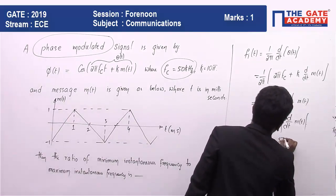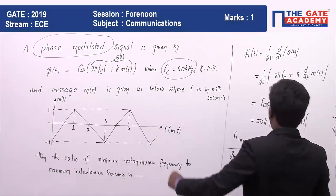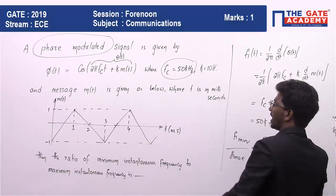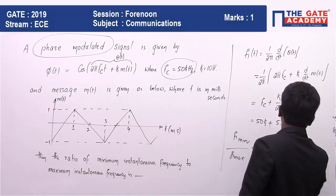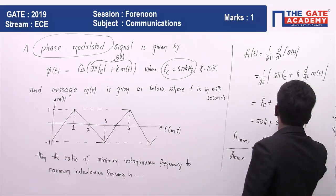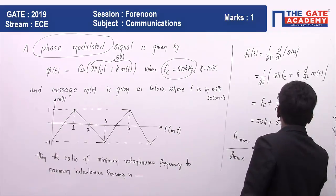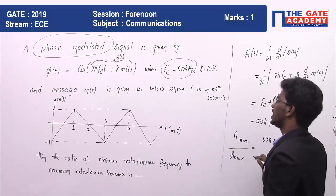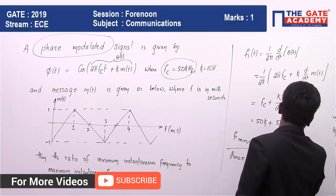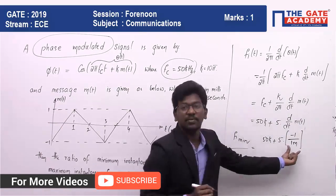And what will be the minimum slope? 50k + 5 · what is the value for that one? Difference in y, that is 0 - 1, that is -1 divided by difference in x, which is how much? 3 - 2, that is 1 millisecond. So this is the minimum slope.